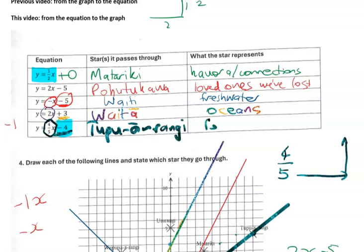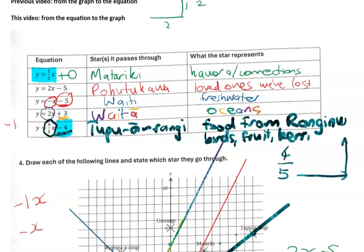So this star is tupu arangi. And this is food. I'm going to put, well, there's lots of ways to explain this from the little bit that I've read. But food from nearer Ranginui. So that's birds. Anything above the ground. So birds. Fruit. Berries. Stuff that grows on trees. Not stuff that grows in the ground. Which is coming up in the next video.